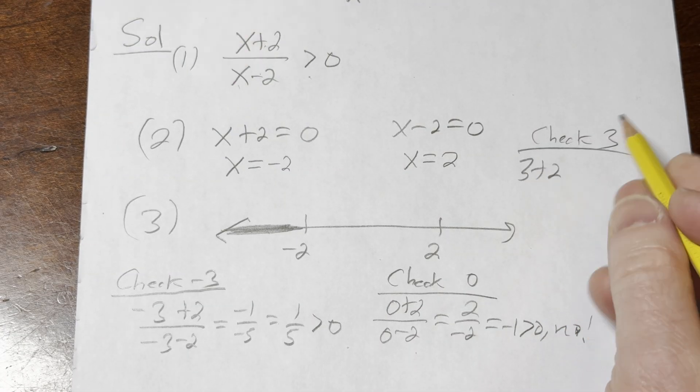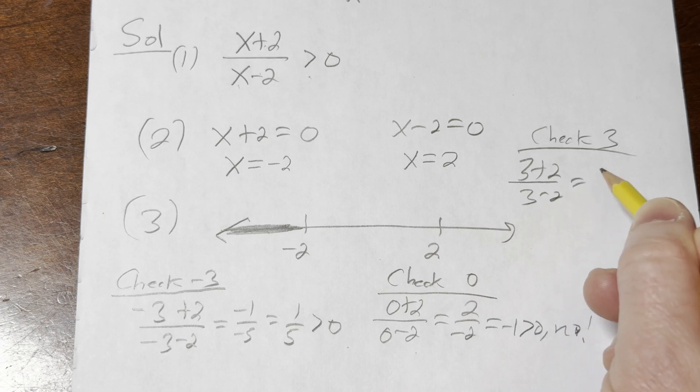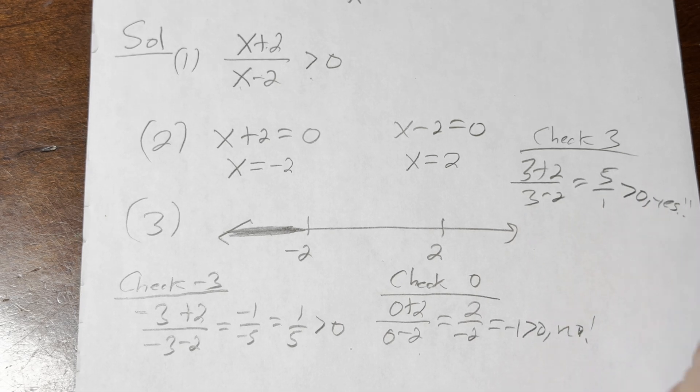So 3 + 2 and then 3 - 2 is 5 over 1. Is that greater than 0? Yes it is. Right. So we shade.